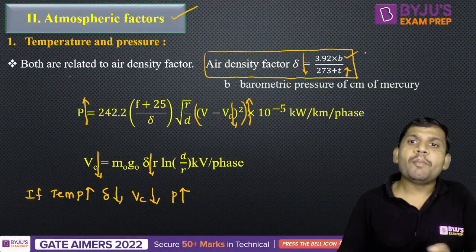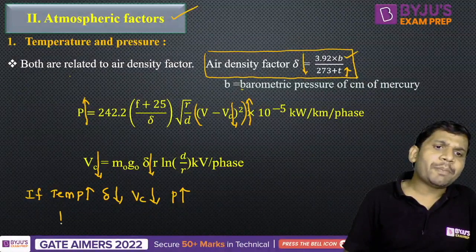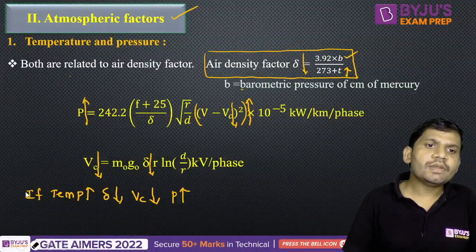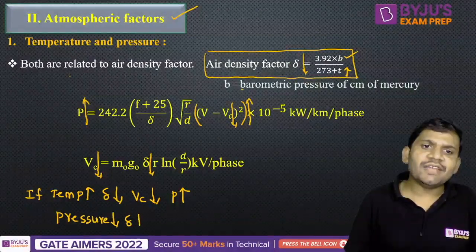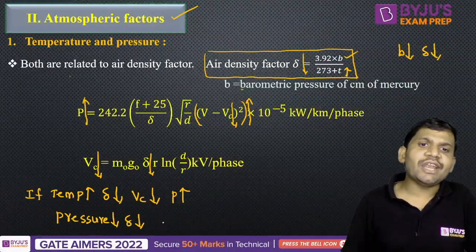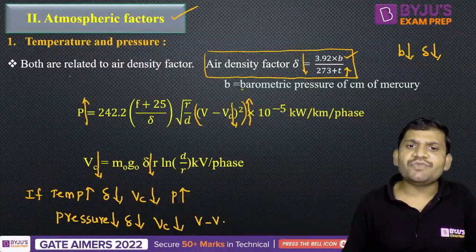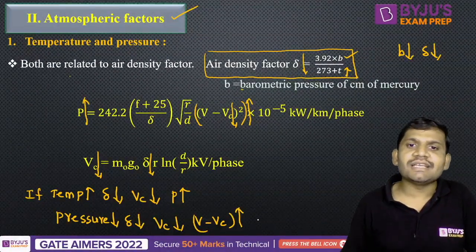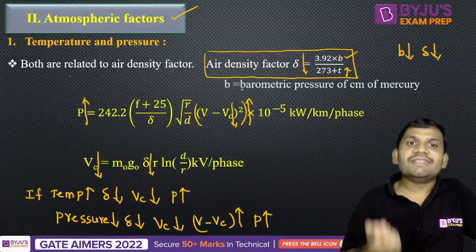Considering pressure — where B is the barometric pressure in centimeters of mercury — if pressure reduces, the air density factor also reduces. If the air density factor reduces, then the critical disruptive voltage reduces. If the critical disruptive voltage reduces, V minus Vc increases, so the corona loss also increases. Like this, corona loss depends on both temperature and pressure.